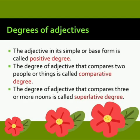So, the adjective in its simple or base form is called positive degree. The degree of adjective that compares two people or things is called comparative degree. And the degree of adjective that compares three or more nouns is called superlative degree.